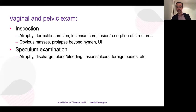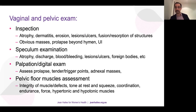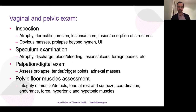Next, speculum examination: look for atrophy, discharge, blood, bleeding, lesions, foreign body, and forgotten pessaries — I have seen a 15-year-old pessary that presented with a rectovaginal fistula. For digital palpation, assess for prolapse, tender trigger points, adnexal masses, and pelvic floor muscle assessment — look for integrity of the muscle and defects, tone at rest and on squeeze, coordination, endurance, force, and whether muscles are hypertonic or hypotonic. This is the platform on which our physiotherapy colleagues work.